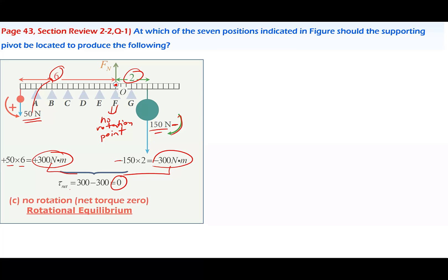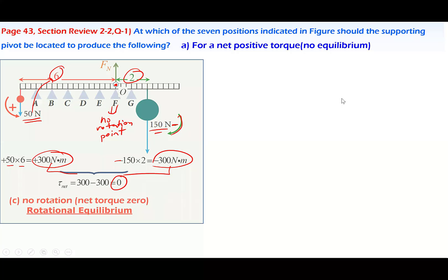This question also has Parts A and B, which are the actual exam questions — the no rotation point Part C is used to help us find them. Now let's find which point produces a net positive torque. For positive net torque there is no equilibrium — this system will start rotating, but in the counterclockwise direction.